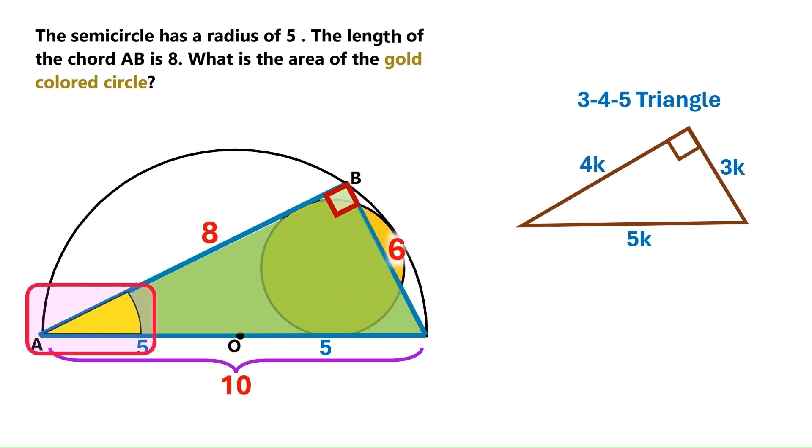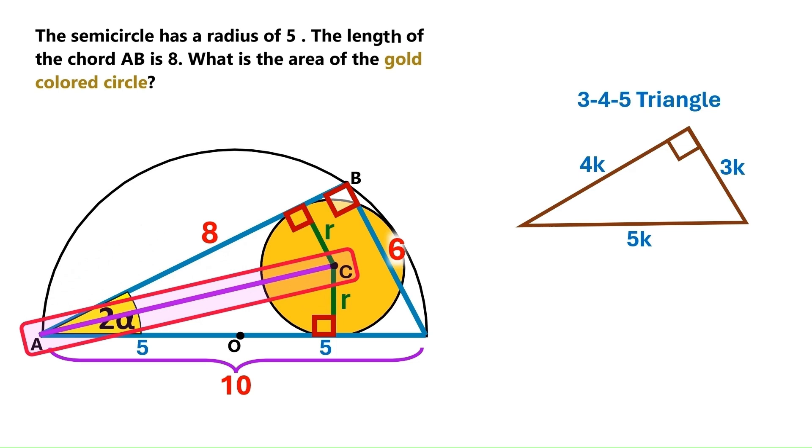Next, I'll put this yellow angle here and I'll call it 2 alpha. You'll find out why it's 2 alpha in a few seconds. Let point C be the center of the gold colored circle. Let's draw this radius for the gold colored circle here and we'll call it R. We've got a right angle here because it's the point of tangency. Let's draw another radius here, and this angle here is 90 degrees too. Now let's draw this line joining the vertex of the triangle and the center of the circle.